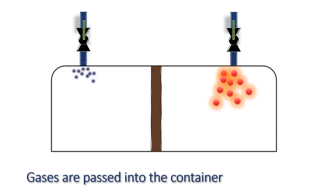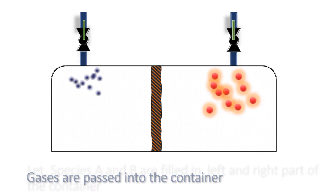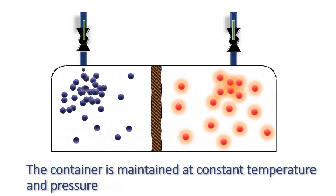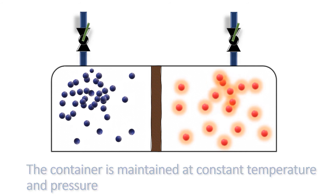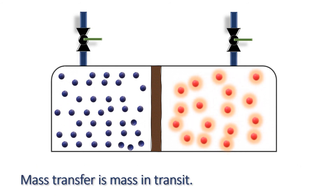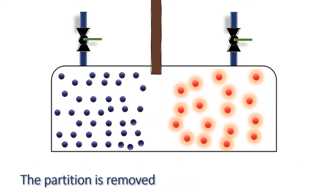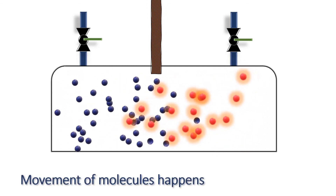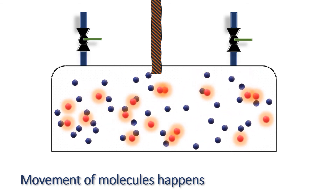For better understanding at the molecular level, let's take a gas container with a movable partition. Two inlets are provided to fill the space in the container with gases. When the partition is removed, the spontaneous movement of molecules happens without any external aid. The concentrated portion of each species moves to a new location by spreading, which we call diffusion.